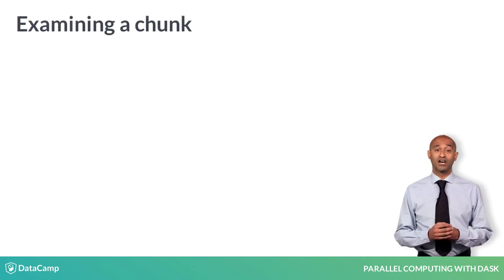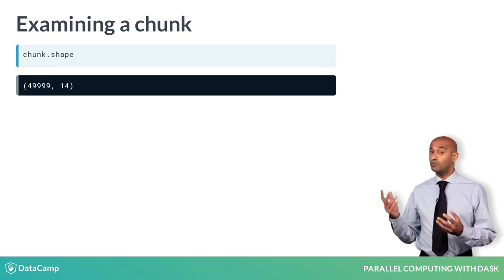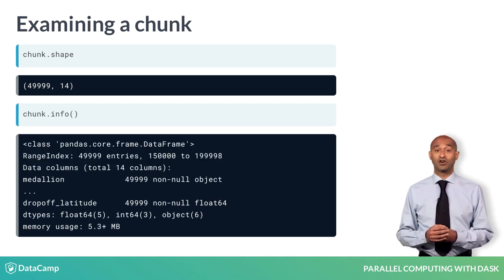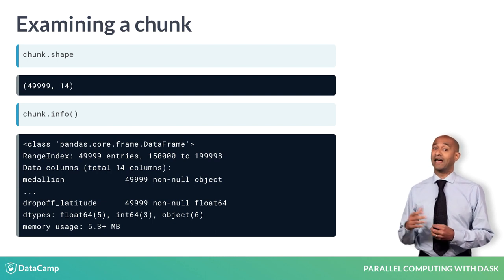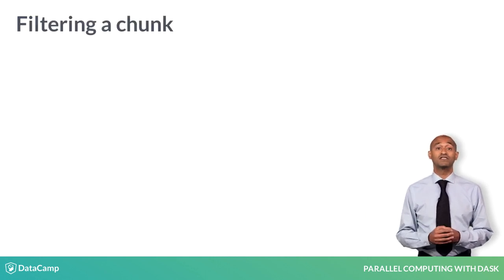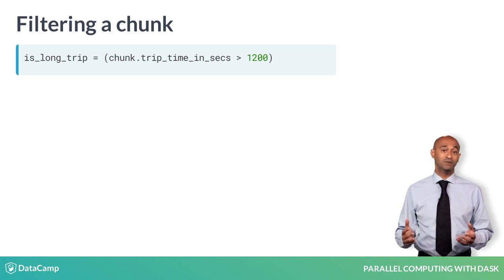The loop variable chunk has standard dataframe attributes like shape, so the last chunk has almost 50,000 rows and 14 columns. Calling the info method shows the column names like TripTimeInSeconds and TripDistance. We can construct a logical series IsLongTrip that is true whenever the trip time exceeds 1,200 seconds or 20 minutes.